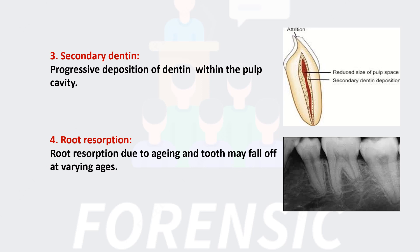The fourth criterion is Root Resorption. Root resorption due to aging starts at the apex and extends upwards. Here we can see a degraded root.